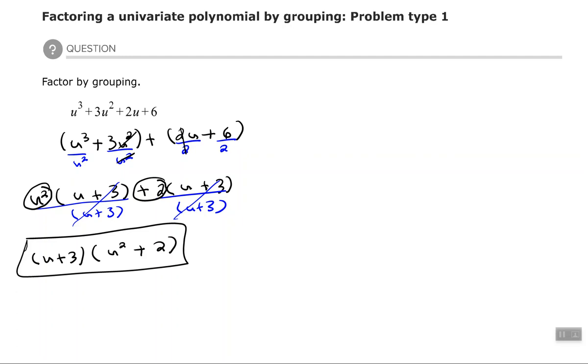So basically, it's making two groups, factoring the GCF out of each group, and then factoring the common binomial out of each group that's left. Okay, let's try another one.